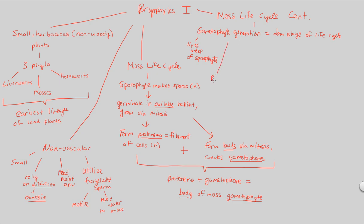The gametophyte generation also possesses structures called rhizoids — these are simply the anchors of the moss. Importantly, they are not roots; roots are part of vascular plants, and we're looking at non-vascular plants. But we do have some sort of anchor to the ground, and that would be rhizoids. These are the anchors at the tips of the gametophyte shoots.